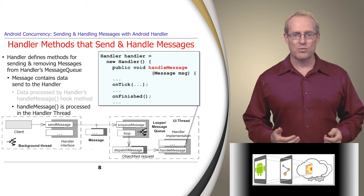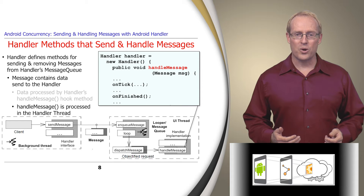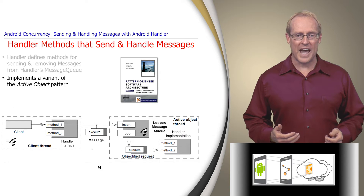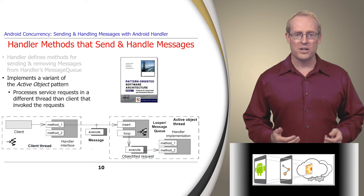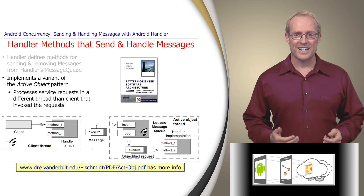The handler and its thread-specific looper collaborate to dequeue each sent message and dispatch its handleMessage hook method in the context of the thread associated with the handler, in accordance with the message-passing variant of the active object pattern. This pattern defines service requests on components as the units of concurrency and runs service requests on a component in a different thread from the client thread that requests the service, as described at this link.